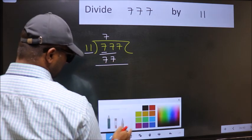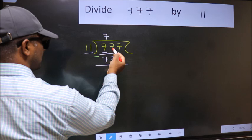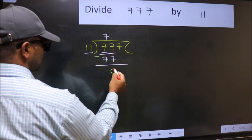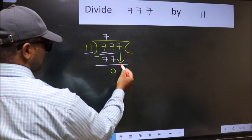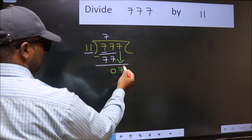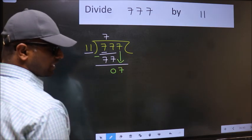Now you should subtract. 77 minus 77 is 0. After this, bring down the beside number. So 7 down. After this step, the mistake happens.